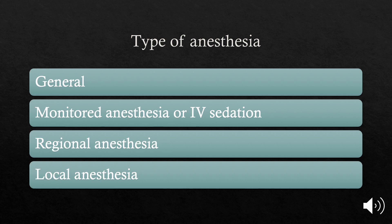Monitored anesthesia is typically used for less invasive procedures like colonoscopies. Regional anesthesia is pain medication used to numb a large part of the body — thinking about epidurals, spinal catheters, and peripheral blocks for surgeries on the arm or leg. Local anesthetics are injected into a small area where you can be awake for a surgery but not feel pain in that specific area, like on your hand.